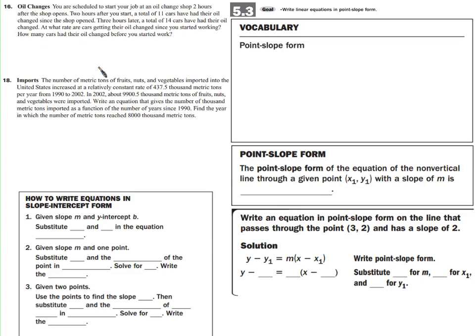Now we'll apply this to a semi-real-life problem. You work at an oil change shop, like a Jiffy Lube. The shop opens 2 hours before you arrive. Two hours after you start (which is 4 hours into business hours), a total of 11 cars have had their oil changed since the shop opened. Three hours later — 7 hours total — 14 cars have had their oil changed. At what rate are cars getting their oil changed since you started working, and how many had their oil changed before you started?